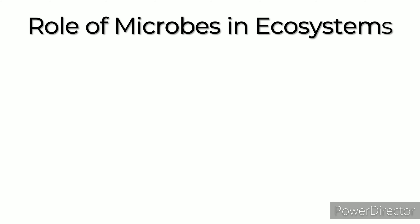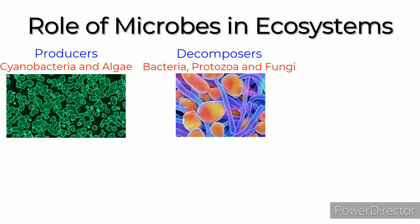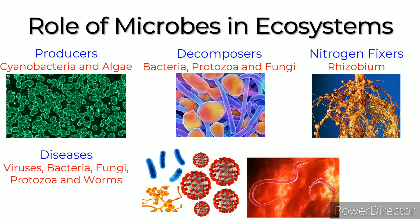Cyanobacteria and algae are microorganisms that act as producers as they make their own food. Decomposers like bacteria, protozoa, and fungi keep the environment clean by decomposing wastes around us. Nitrogen fixers like Rhizobium fix atmospheric nitrogen into nitrates which can be used by plants. Many microorganisms like viruses, bacteria, fungi, protozoa, and worms cause diseases which lead to economic losses.